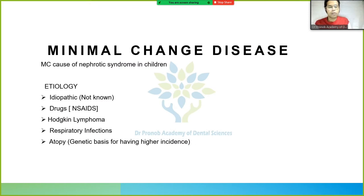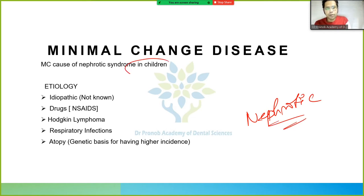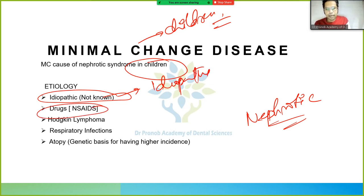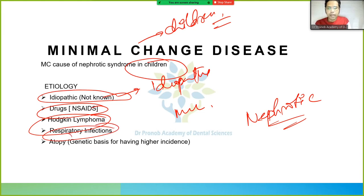One type of nephrotic syndrome is minimal change disease, which is common in children — remember 'change' for children. Its etiology is mostly idiopathic. Other causes include drugs like NSAIDs, Hodgkin's lymphoma, respiratory infection, and atopy — the genetic basis for higher incidence.